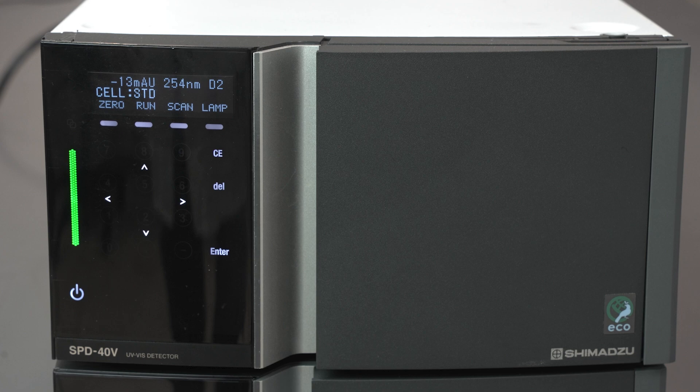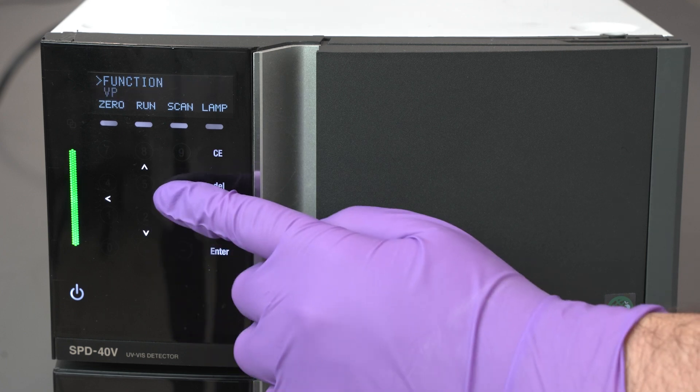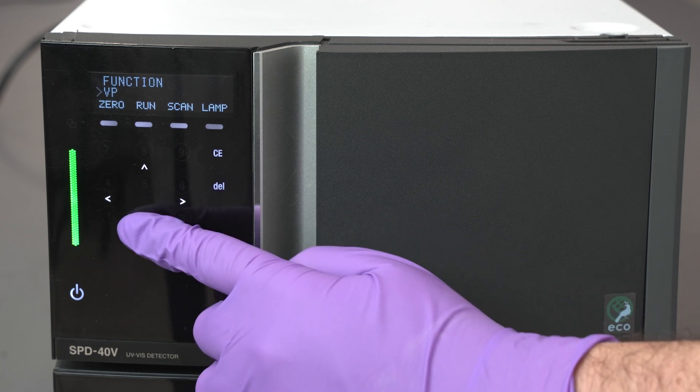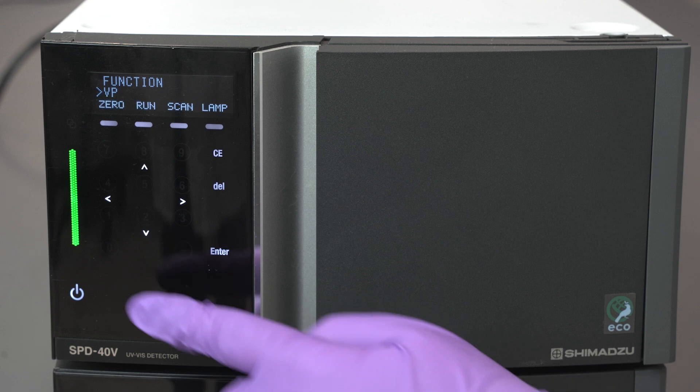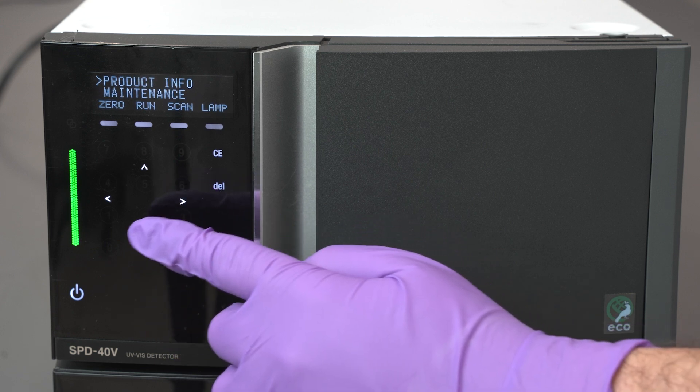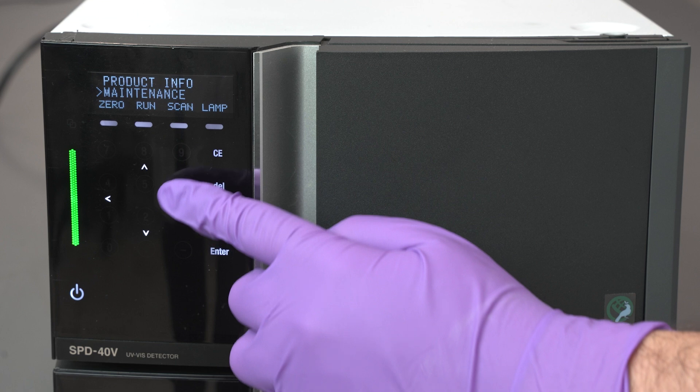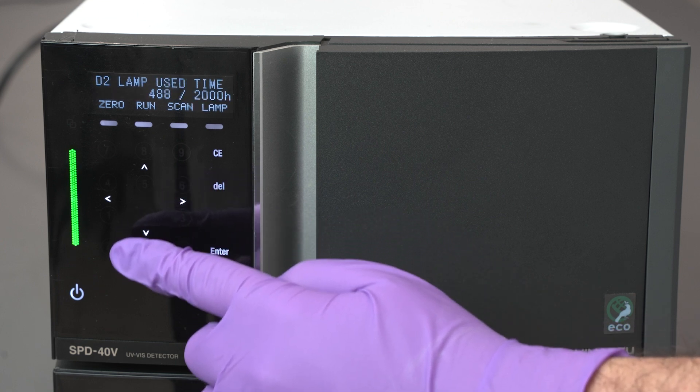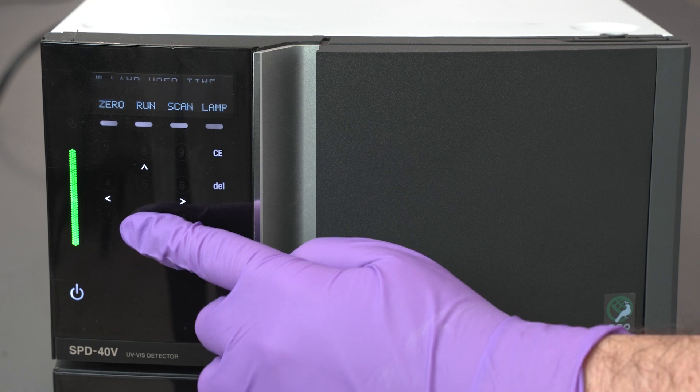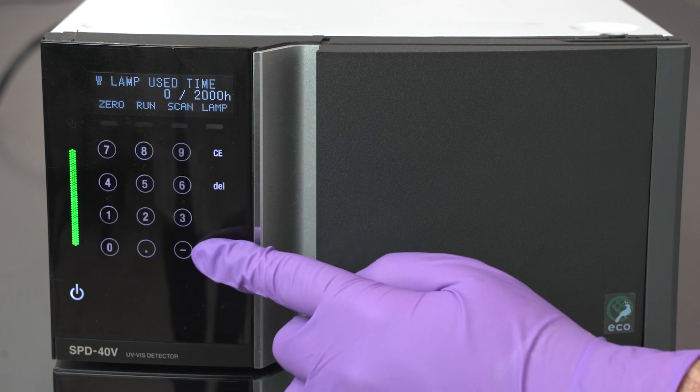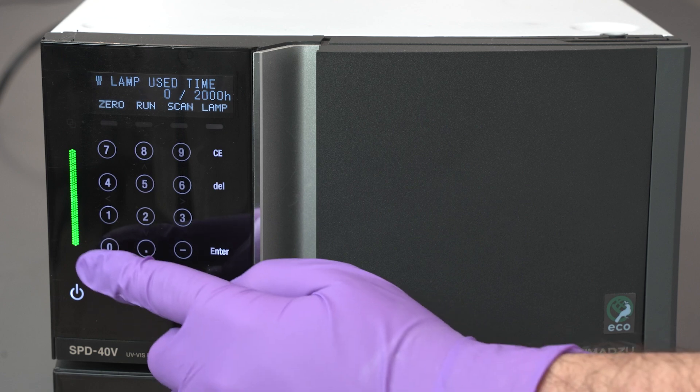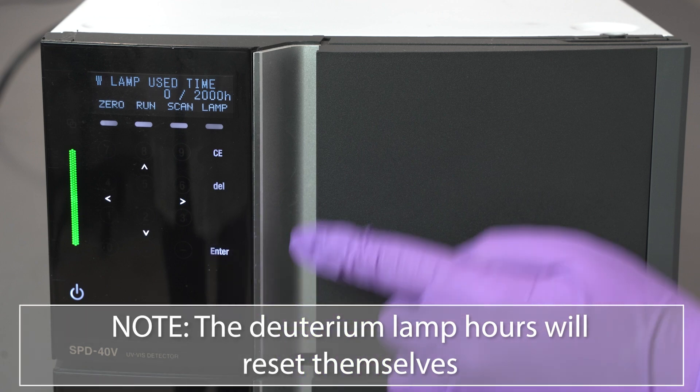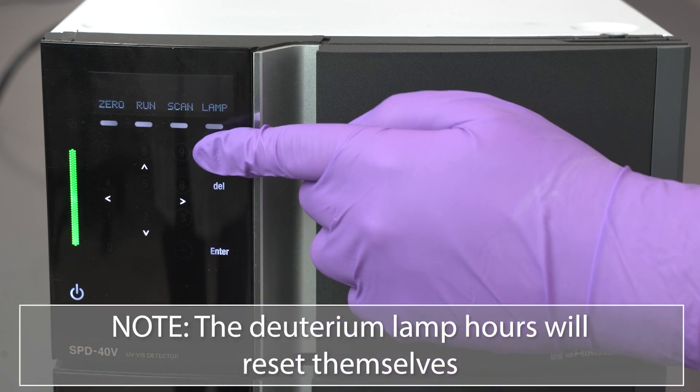On the detector front panel, press the right arrow where you will see function and VP. Press the down arrow to highlight VP before pressing the right arrow to open the VP menu. Press the down arrow until you see maintenance. Press the right arrow to open maintenance menu when it is highlighted. Press the down arrow until you see W lamp use time. Press enter, then zero, then enter again to reset the time. Note that the deuterium lamp hours will reset themselves.